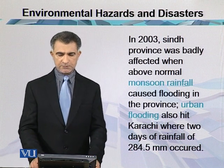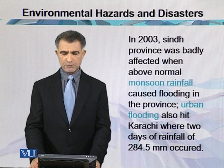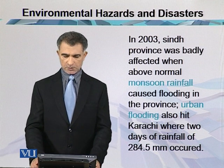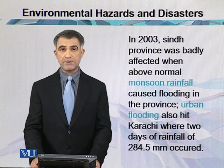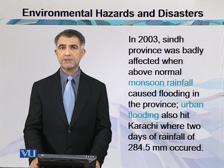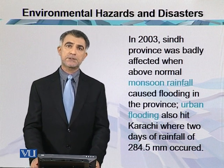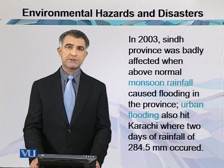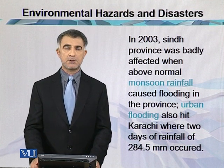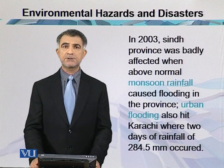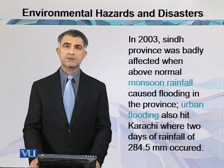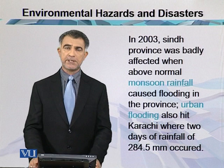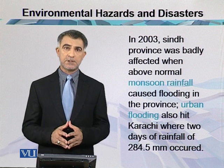In 2003, Sindh province was badly affected when above-normal monsoon rain caused flooding in the province. Urban flooding also hit Karachi, where two days of rainfall of 284.5 millimeters occurred. So floods not only affect rural and agricultural areas, but also urban areas — the low-lying depressions in the city were filled with water. In recent years, we have also seen some areas of Lahore go under water. Those depressions fill with water and the area is under flood, which is called urban flood.